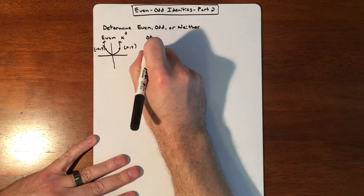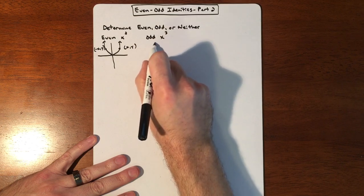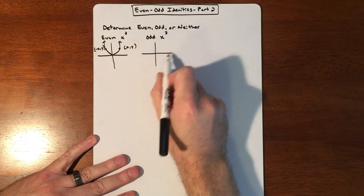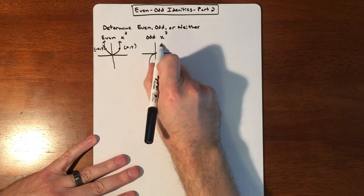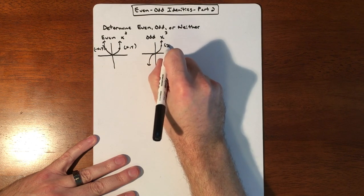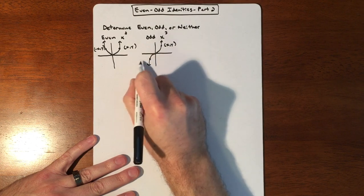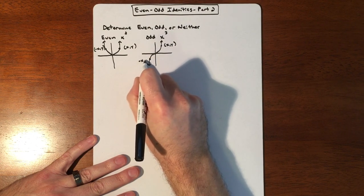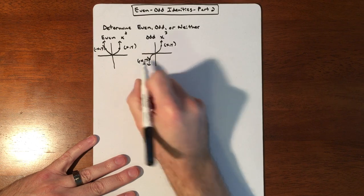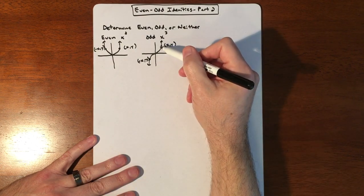And if you have an odd, which is going to be an x cubed, it's kind of the most basic one I think of, it has this kind of a look to it. And the idea here is for every x, y that you have, you also have a negative x, negative y.